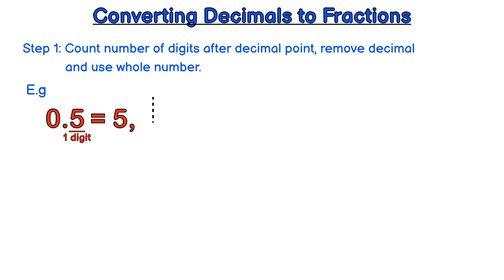Let's look at another example, 0.25. We notice that there are two digits after the decimal point, remove the decimal and just use the whole number. So we just have 25.